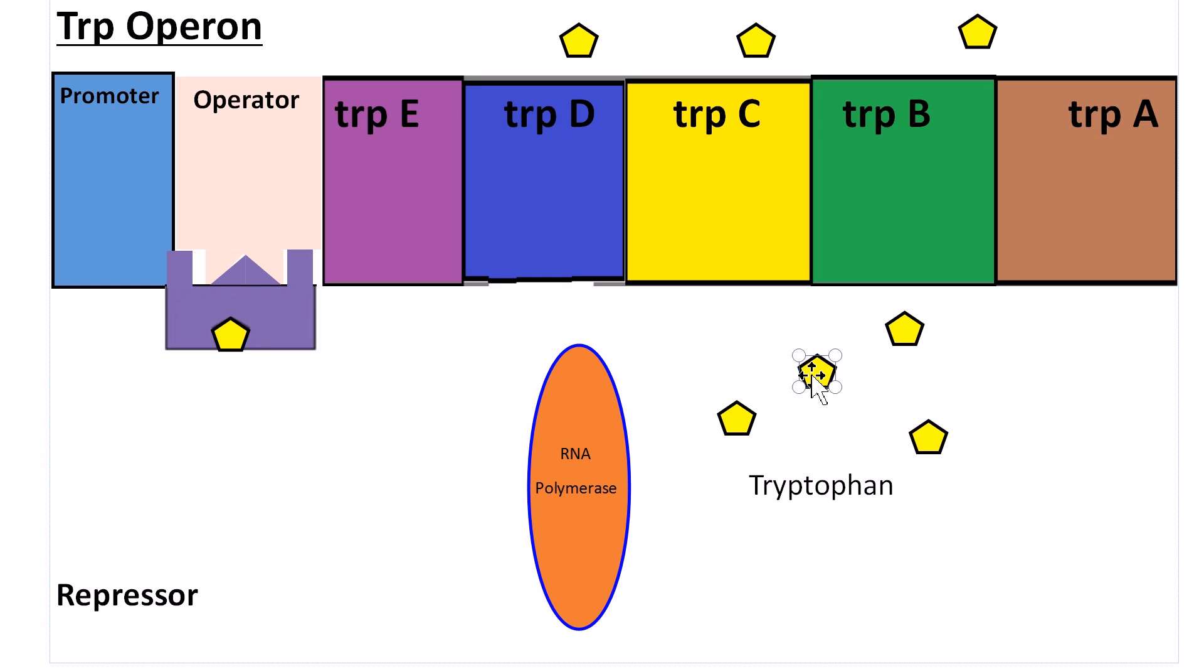Tryptophan in this case acts as a signal molecule, which activates the trp repressor protein in the presence of tryptophan. When it acts this way, it is called a corepressor, because it binds to a regulatory protein, reducing the expression of the operon's genes.